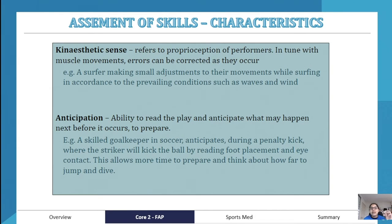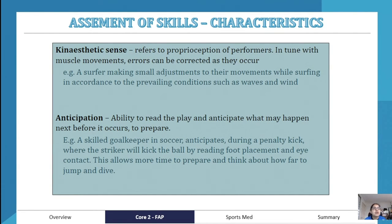For example, a bowler may feel during their run-up that something isn't right and adjust their wrist position before delivery. Similarly, a surfer makes small adjustments to their movements while surfing in response to prevailing wave and wind conditions. Anticipation refers to the ability to read the play — an autonomous player can anticipate what opponents may do before it occurs and prepare accordingly.